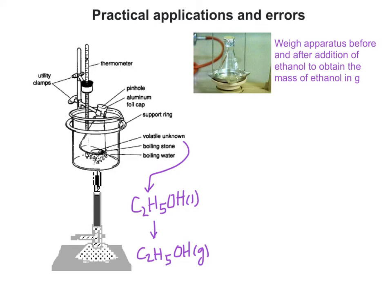We get C2H5OH as a gas. We weigh the apparatus before and after addition of the ethanol to obtain the mass of the ethanol by difference.